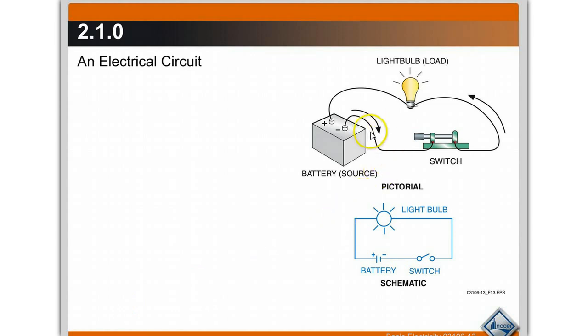Let's look at the components in this circuit. In this pictorial diagram here is a battery, a switch, a light bulb, and then the wires to connect everything together. This is a DC circuit.